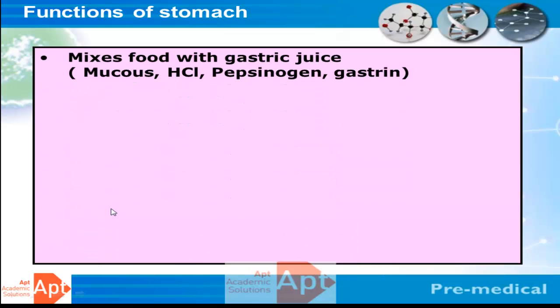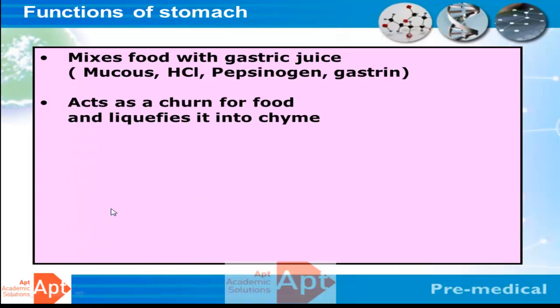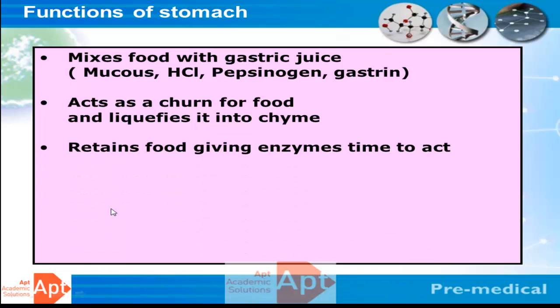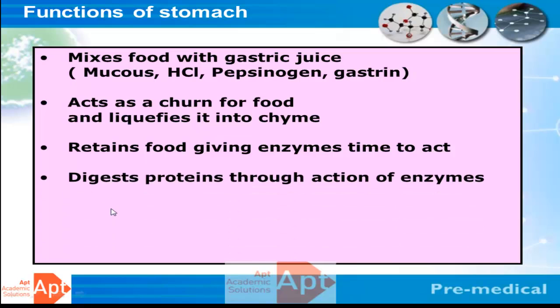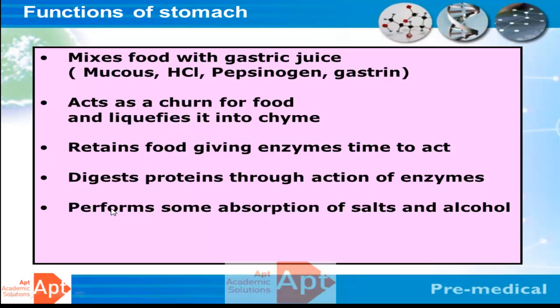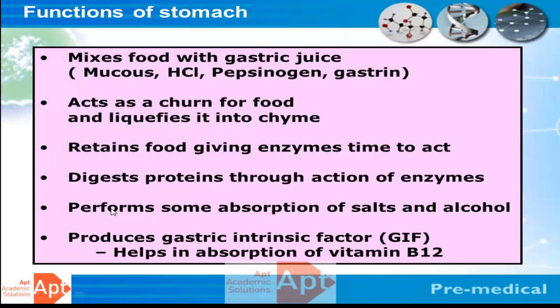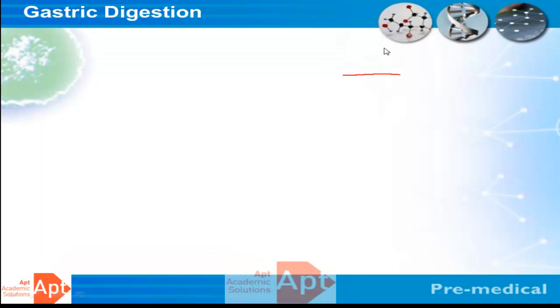The main functions of the stomach are: it mixes food with gastric juice, which consists primarily of hydrochloric acid, pepsinogen, and gastrin. After digestion, the food is liquefied into chyme. The stomach retains food for a reasonable period of time so enzymes can act on it. The prime role of the stomach is protein digestion, but it also performs some absorptive functions, particularly for salts and alcohol, and produces gastric intrinsic factor for absorption of vitamin B12.